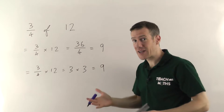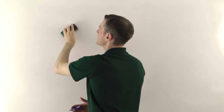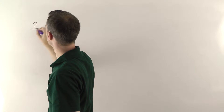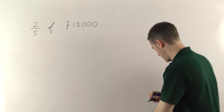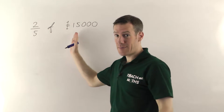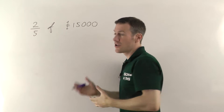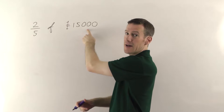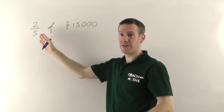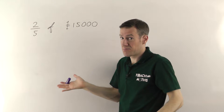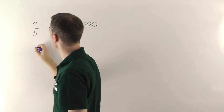I'm going to do one more example and show you a different way of thinking about this — essentially it's the same thing, just a different perspective. So this time we'll find 2 fifths of 15,000 pounds. Again, 'of' means times, so you could think of it as 2 fifths times 15,000 and do the multiplication. But another way to think about it: if you first find out what 1 fifth of 15,000 is, you can use that to find what 2 fifths is.